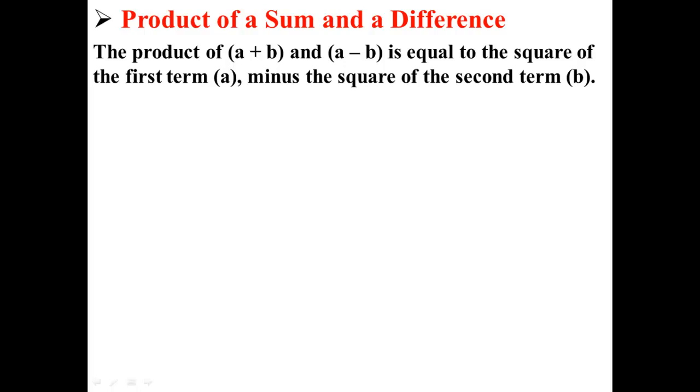Let's talk about the product of a sum and a difference. The product of the sum a plus b and the difference a minus b is equal to the square of the first term a minus the square of the second term b. Basically, what we're saying is (a + b)(a - b) = a² - b².